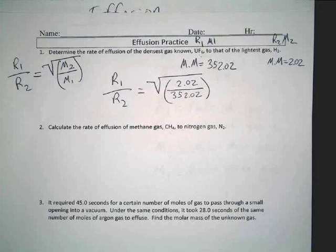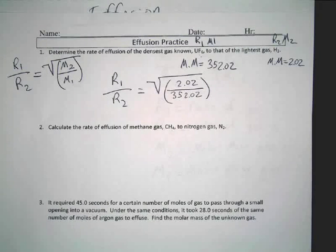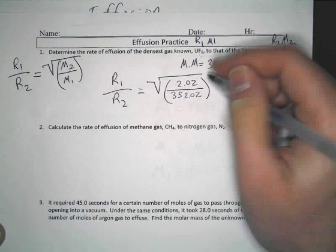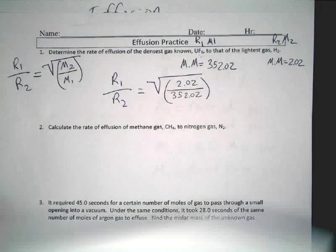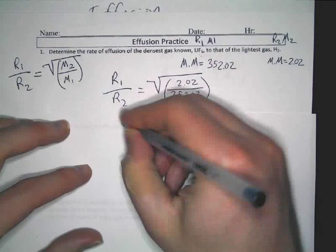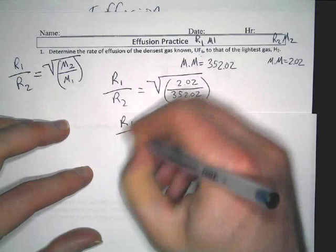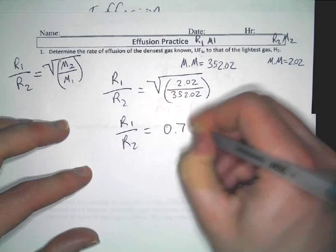Now, what this means in practicality: do we know the rates for R1 or R2? Is it given or ever mentioned? No. So we're just going to write those down and assume we'll figure that out — because we will. So let's plug in our values. Notice how M1 goes on the bottom and M2 goes on the top. You actually do this math and you will get some answer.